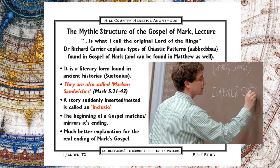Some biblical scholars literally call these Markan Sandwiches. To give you an example: there's a story where there's a dying 12-year-old girl. Jesus is told about this and then goes to heal her. But in between, this story is interrupted by another story of a woman who had been bleeding for 12 years. This is an inclusio — the story starts one way, gets interrupted by another story, and then the original story ends. That's telling you that the two stories relate to each other. There's some meaning there. This is not how history works. This is how literature works. This is how myth is written.